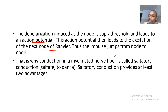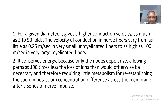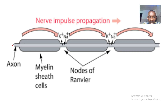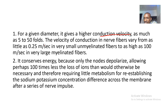Thus the impulse jumps from node to node — that is why conduction in a myelinated nerve fiber is called saltatory conduction, derived from the word saltare, meaning to dance. Saltatory conduction provides at least two advantages. For a given diameter, it gives a higher conduction velocity — as much as 5 to 50 fold — because the action potential doesn't have to travel everywhere, only to the selective nodes of Ranvier.